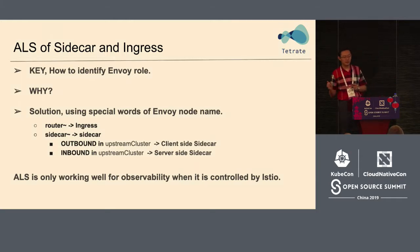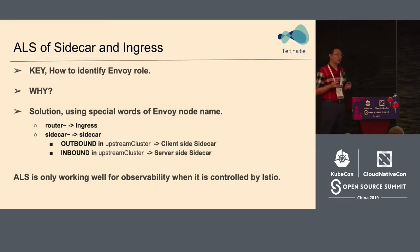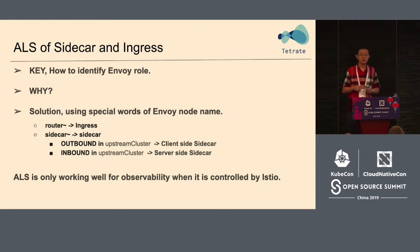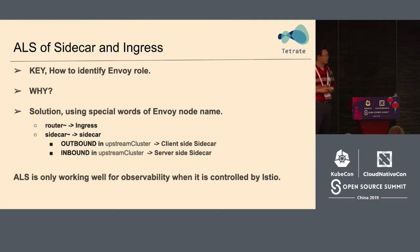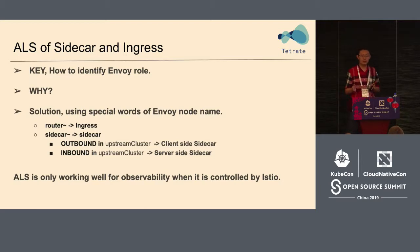The first problem to solve is determining whether it's ingress or sidecar. Envoy itself doesn't know, but fortunately we have Istio — specifically the pilot. When Istio names each Envoy, it follows a regular pattern. The node name contains very important information: if it's ingress, it's named 'router'; if it's sidecar, it's named 'sidecar'. So you can identify what it actually is from the naming pattern.